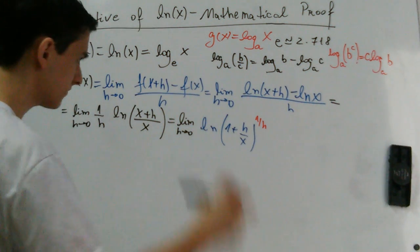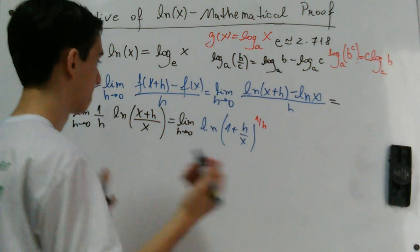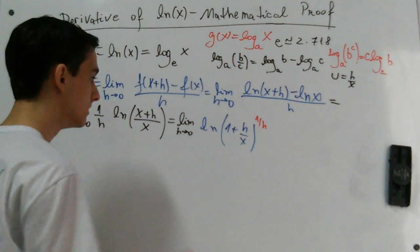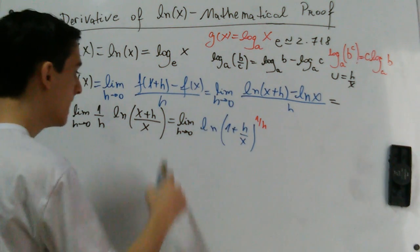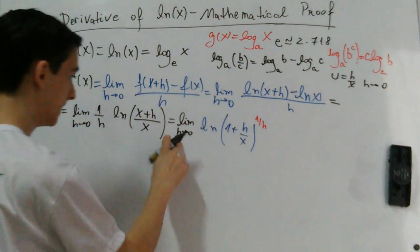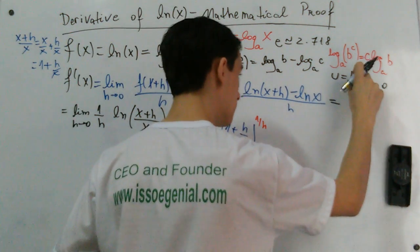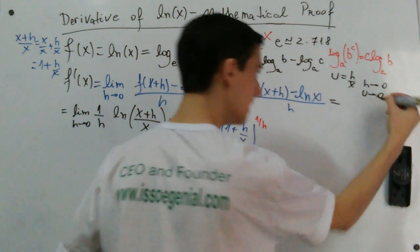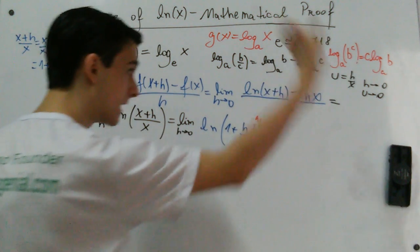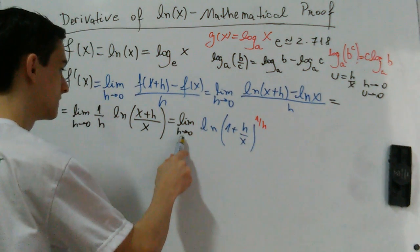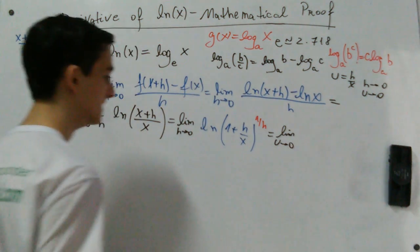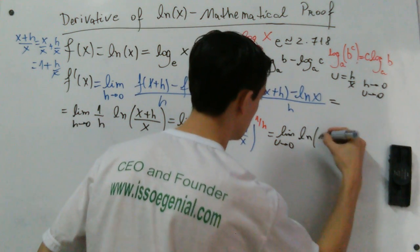Now we are going to create a variable. Let's call it u, so u is equal to h over x, and we put u in place of h over x. We need to evaluate what happens when h approaches 0. When h approaches 0, u also approaches 0. So when h approaches 0, u also approaches 0. This becomes the limit when u approaches 0 of natural log of 1 plus u.